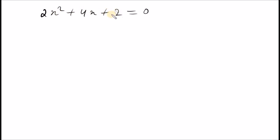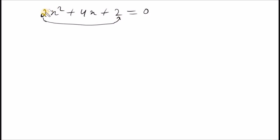We will solve this method by x value. The method of x value involves constant terms. The coefficient of x squared is 2, and 4 is the coefficient of x, and 2 is the constant term.